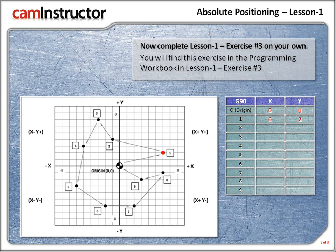Now let's figure out the remaining absolute coordinates by counting up the grid squares, and we need to remember to work out if it's a positive or negative value. Off to position 2. Position 2 is just to the left of the y-axis, so the x-value is going to be negative. How many squares? It's 1. So for position 2, x is minus 1. That's above the x-axis, so y is going to be positive. Let's count the squares up: 1, 2, 3, 4. We've got plus 4.